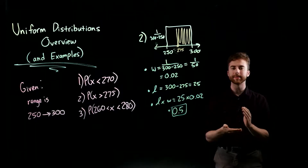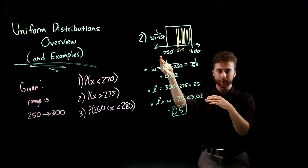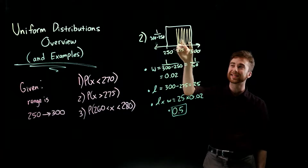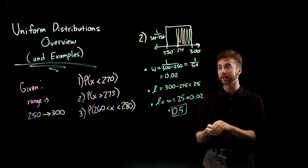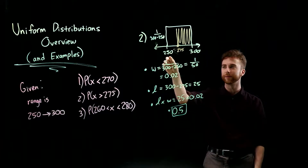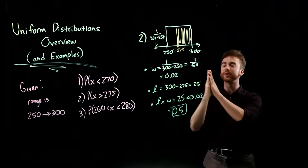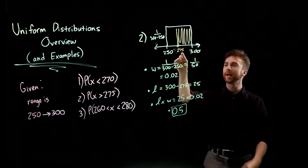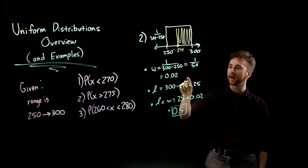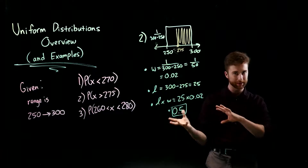The next example is the same process but now we want the probability that X is greater than 275. Map out the number line with 250 on the lower end and 300 on the upper end. The width is again 1 over (300 minus 250) equals 0.02. For the length, we want 275 through 300, and 300 minus 275 is 25. So 25 times 0.02 gives 0.5 — the probability that X is greater than 275 is 50%.